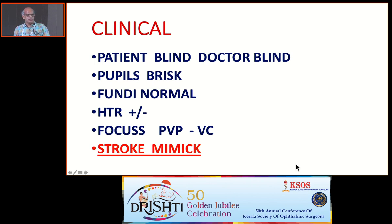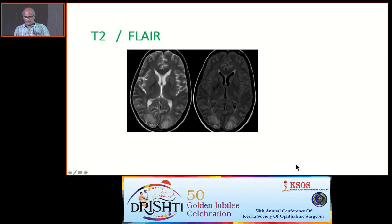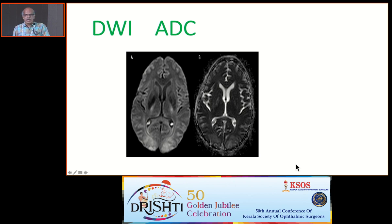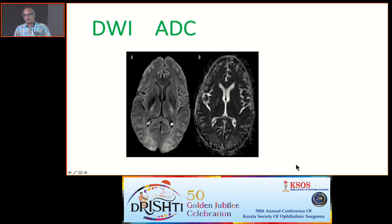When you get these symptoms in a predisposing setting, always think of a stroke mimic. On MRI, T2 and FLAIR will show hyperdensity at the occipital lobes and visual cortices. The classical diagnostic sequence is diffusion weighting and ADC map. On diffusion weighting you see hyperdensity, and the ADC map will be hyperdense — unlike infarct where ADC is hypodense. Once you get a hyperdense ADC map, that represents vasogenic edema. Otherwise it will be cytotoxic edema with a hypodense ADC.